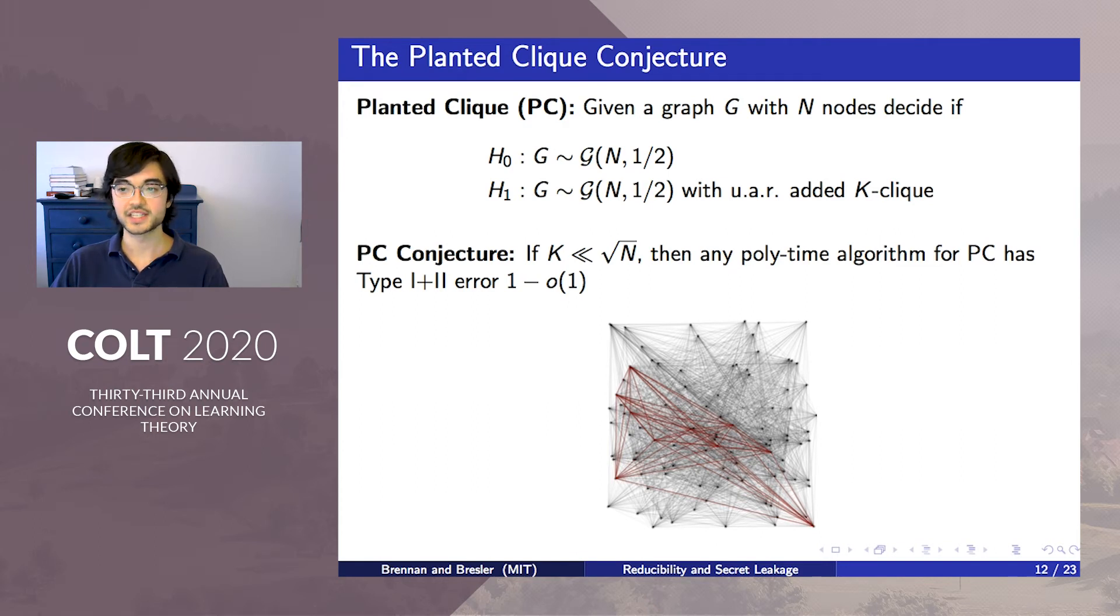First we will revisit the ordinary planted clique problem and PC conjecture. In the detection formulation of PC, the task is to test between an Erdős-Rényi graph of size n and an Erdős-Rényi graph with a k clique planted uniformly at random. Even though this problem can be solved in quasi-polynomial time already when k is of order log n, all of the best known polynomial time algorithms require that k be at least root n. The PC conjecture predicts that this is necessary.